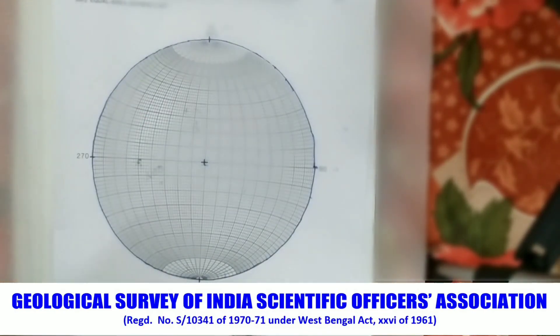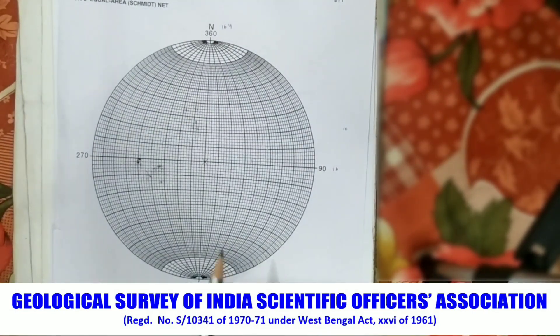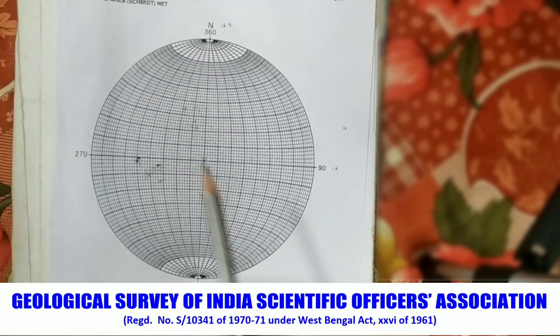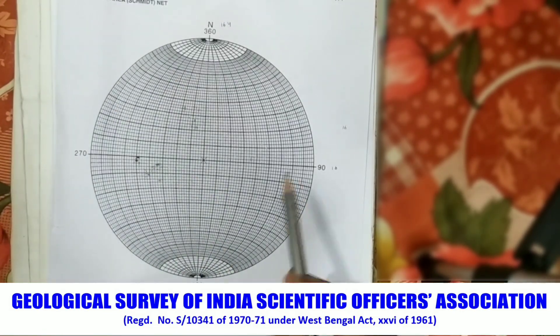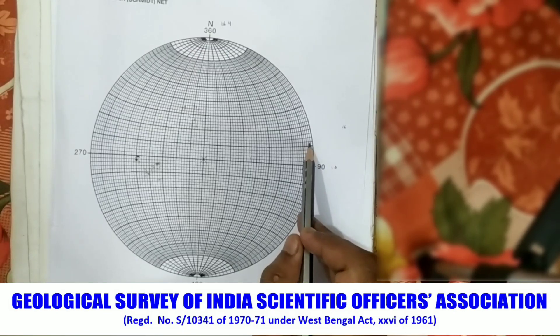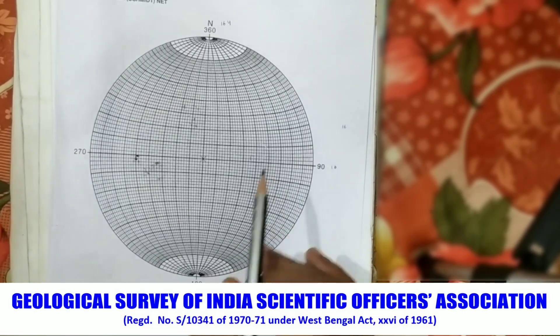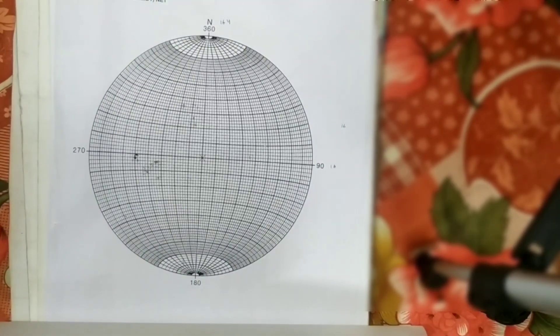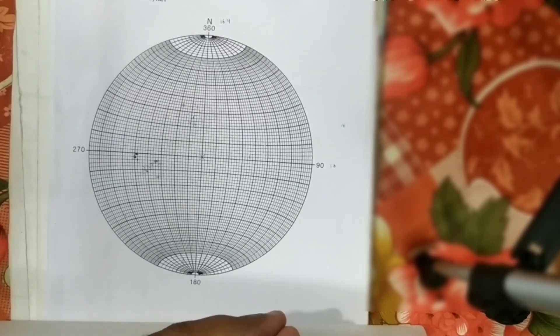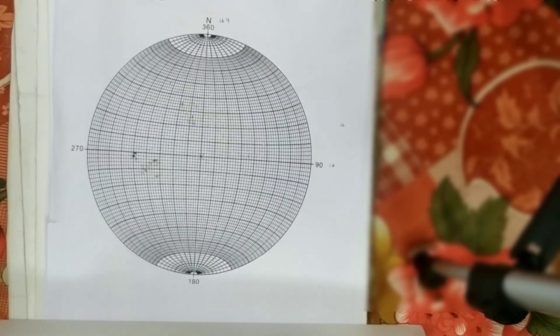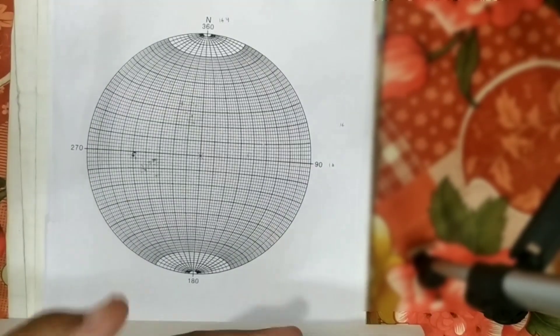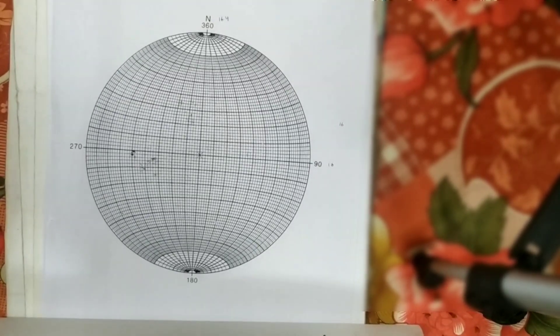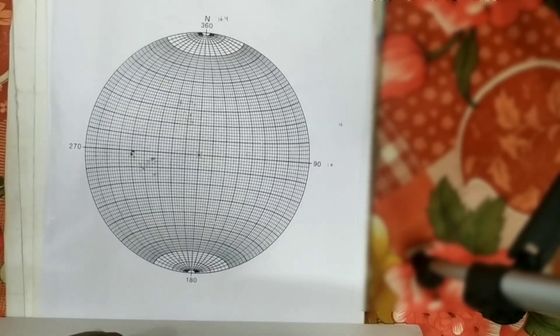The basics of how stereonets are generated I will deal with later. This is a stereonet, an equal area net, because each subdivision has equal area. There is another net called equal angle net, but for normal plotting of structural bedding data or pole contouring, this equal area net or Schmidt net is generally used. Equal angle net is called Wulff net.